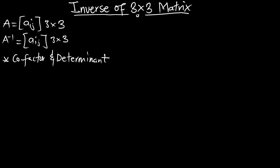We are going to focus on the cofactor and determinant approach of finding the inverse. With this approach, the inverse of a matrix A is going to be 1 over the determinant multiplying the adjoint of the matrix A.